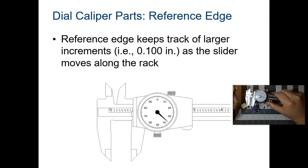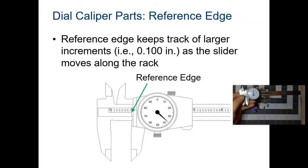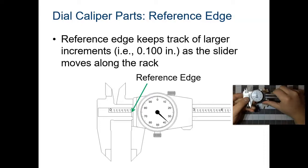The reference edge keeps track of larger increments as the slider moves along the track. So this right here keeps track of the larger increments. The reference edge, whatever that indicates. So if you go past the two, that would be a 0.2. If you go past the one, it would be 0.1.